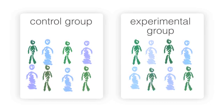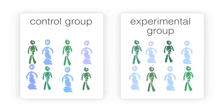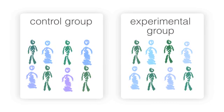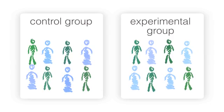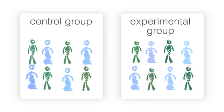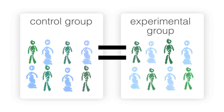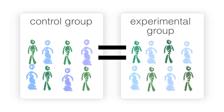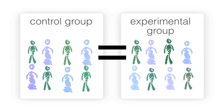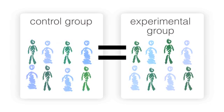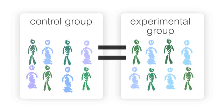Since everyone in the study will experience different natural changes, researchers can measure the changes in each person, add them together, and find the average change for each group. If the average change in all the groups is the same, then the changes in any one person, whether for better or worse, are probably due to natural variation and not whatever is being researched.